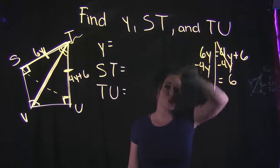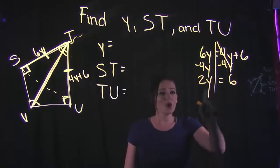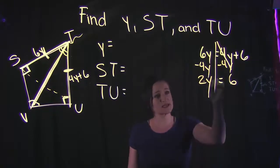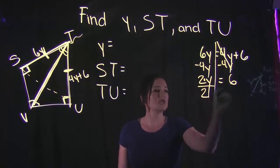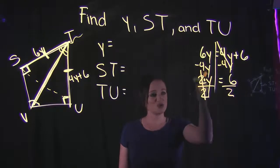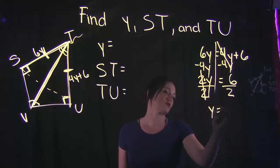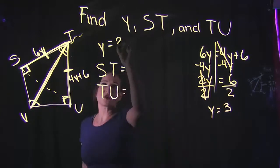We're left with 2y is equal to 6. Keep in mind that is 2 times y, so the opposite of multiplication is division, so we're going to divide out the coefficient. And 2 over 2 cancels, leaving us with y is equal to 3. So that gives us our first answer here: y is equal to 3.